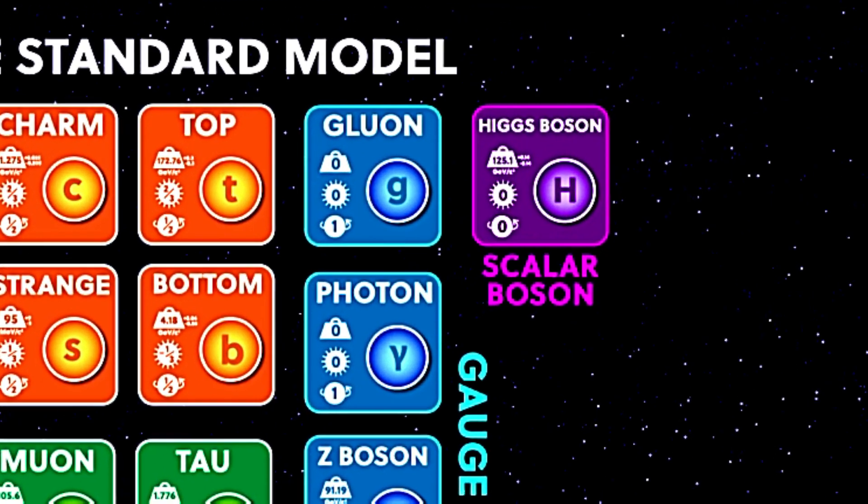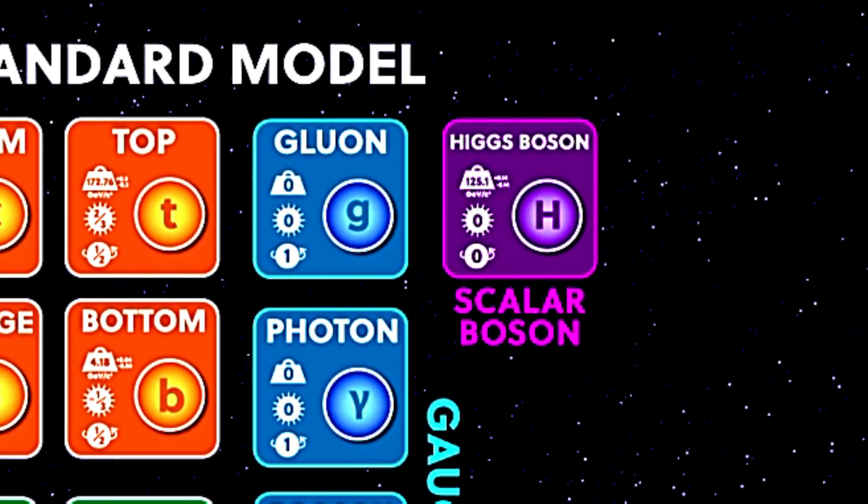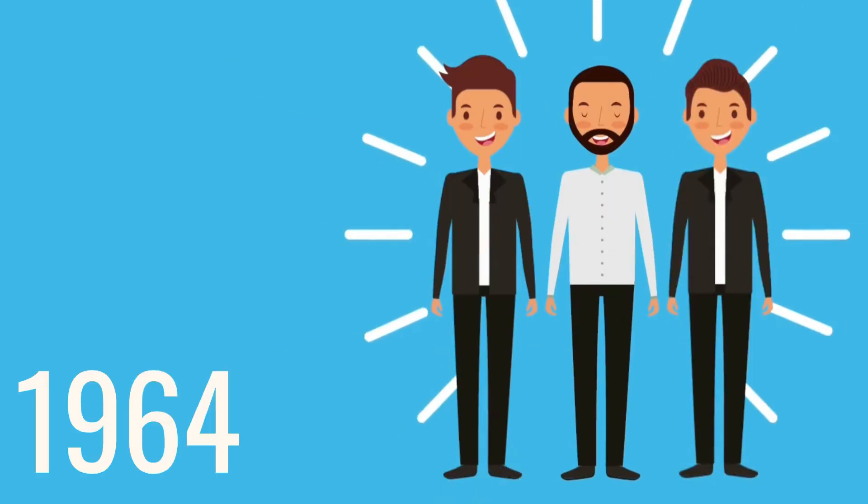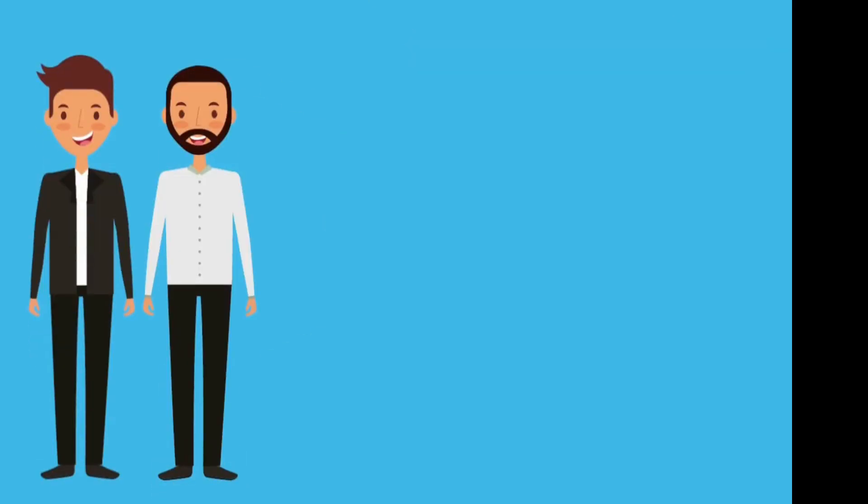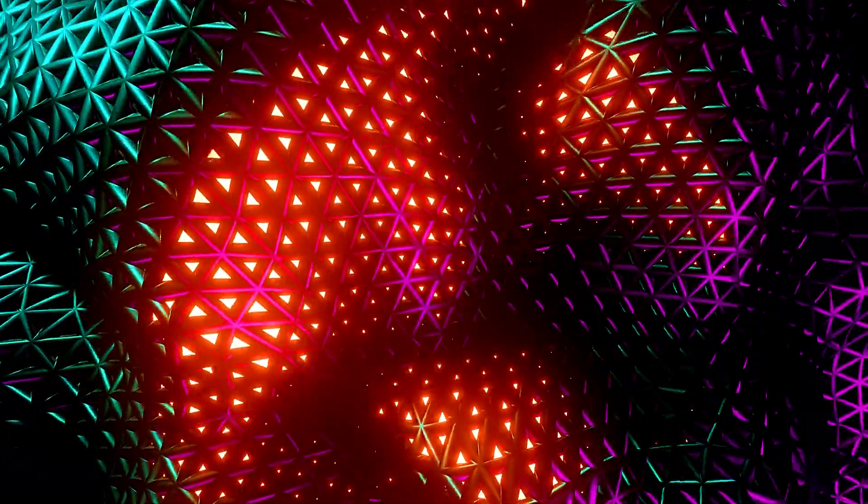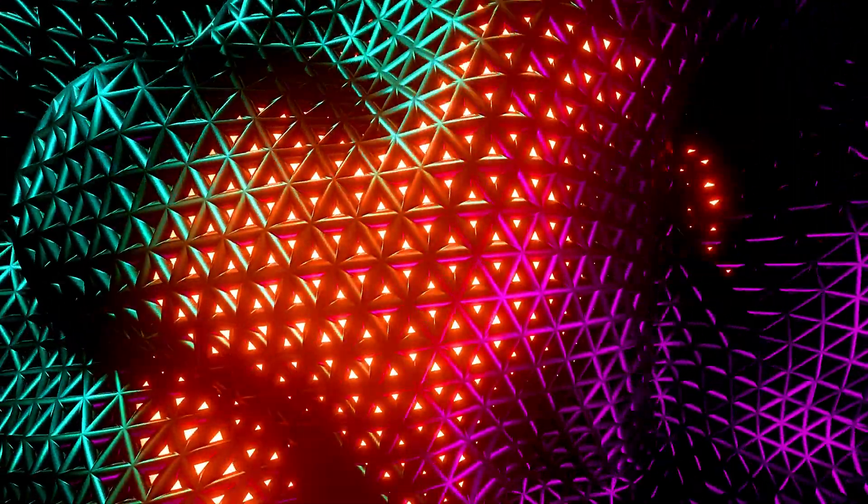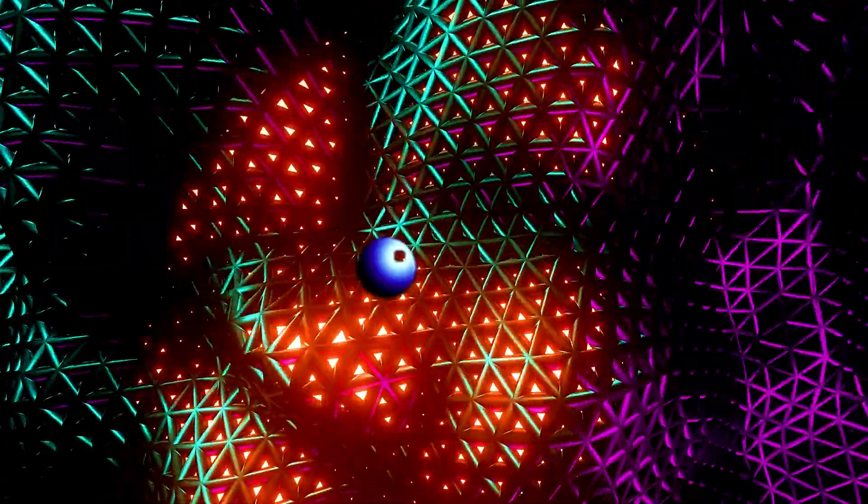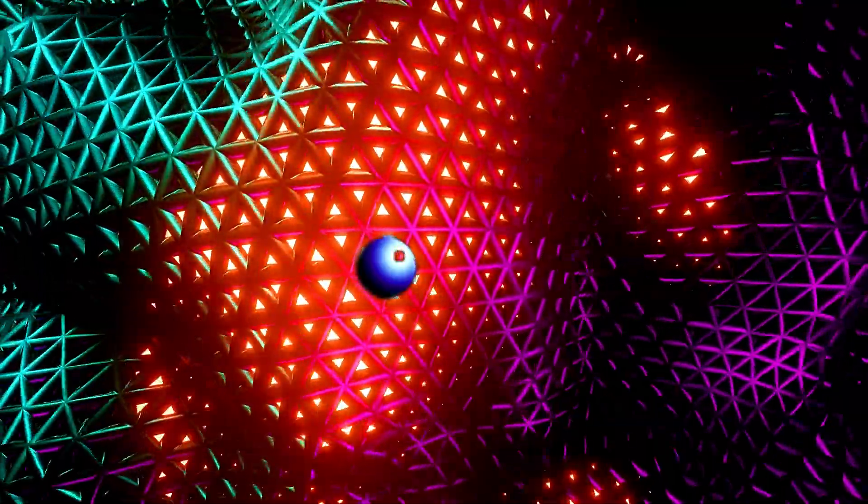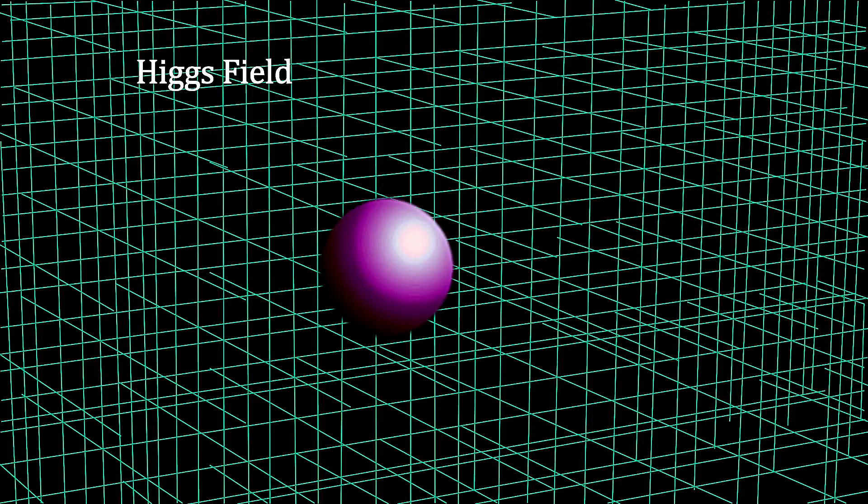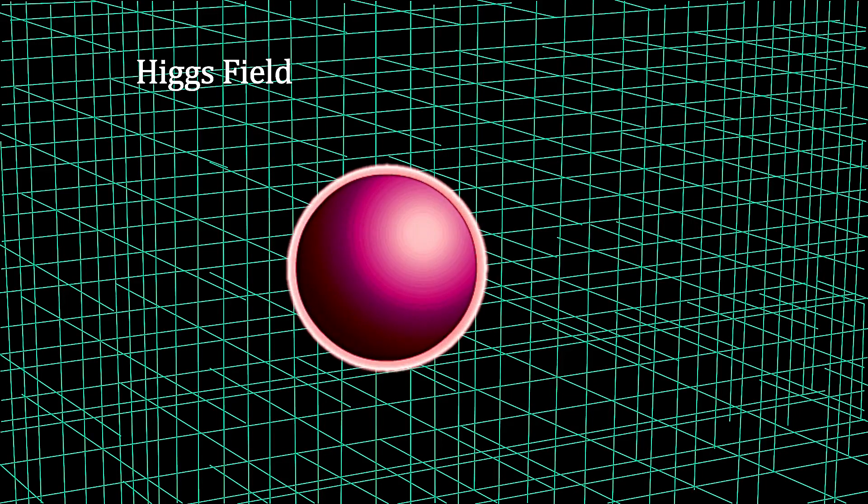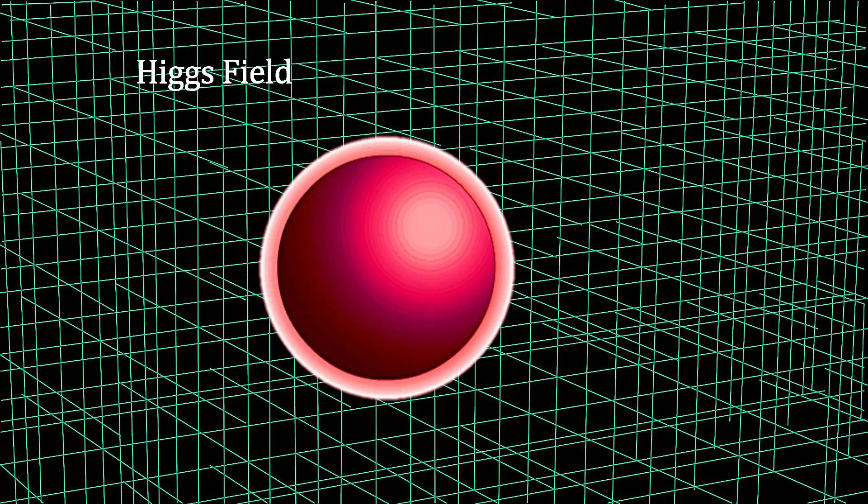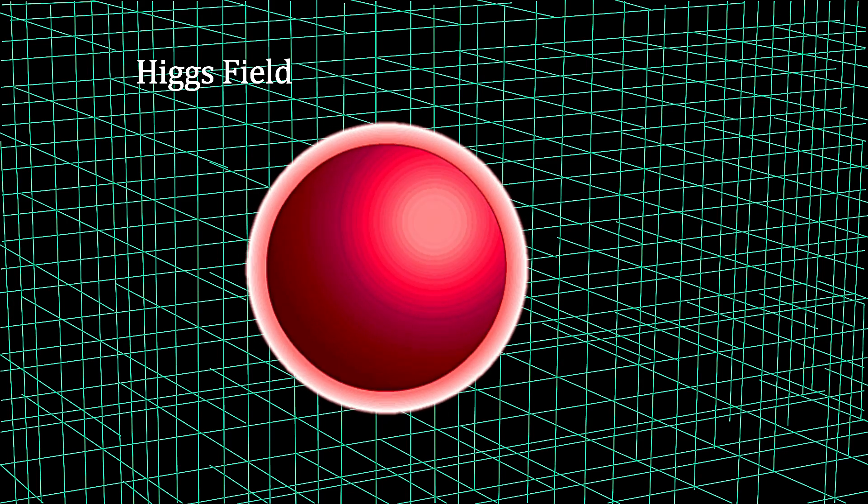The Higgs boson is a fundamental particle in the standard model of particle physics. In 1964, a group of physicists, including Peter Higgs, introduced the concept of the Higgs mechanism as a means to elucidate the process through which particles obtain mass. The concept of mass in particle physics is intricately linked to the Higgs mechanism. The Higgs mechanism explains that particles interact with a field known as the Higgs field, and this interaction is what gives them mass.